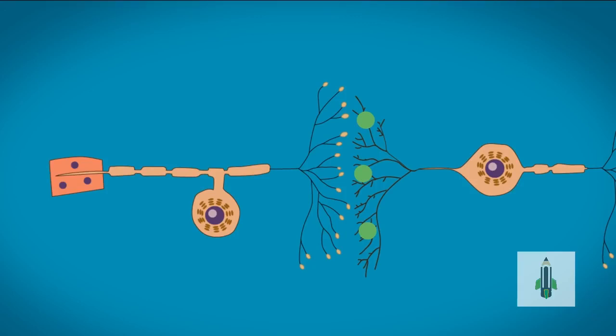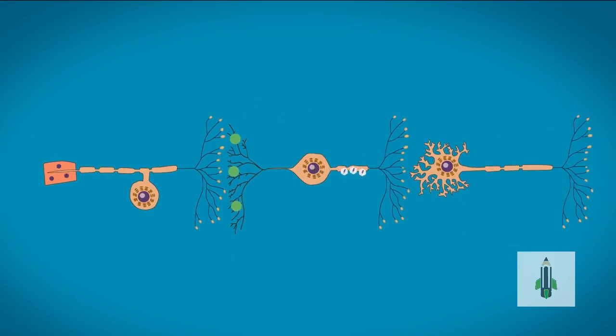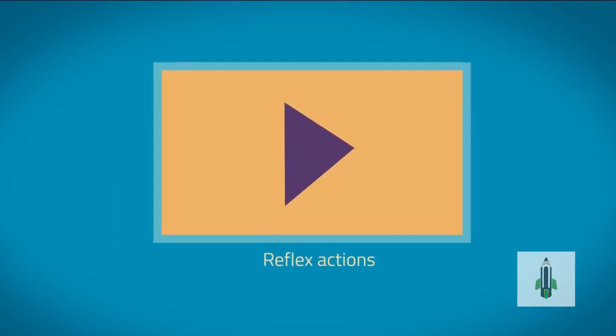This stimulates the second neuron to generate a new electrical signal. Synapses not only connect two or more adjacent neurons together, but they also allow nerve signals to travel in one direction only, and they control the speed of the signal. In another video, we will look at reflex reactions and what happens when a very quick response is needed.